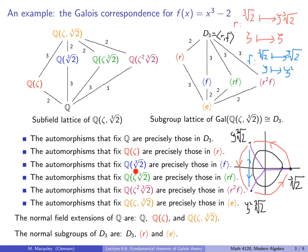Next, Q adjoined the cube root of 2: the cube root of 2 is fixed by F, so the two automorphisms that fix this subfield form the corresponding subgroup generated by F. Next, Q adjoined zeta times the cube root of 2: I claim the two automorphisms that fix this subfield are in the corresponding subgroup. We can check informally — if we do R then F, that automorphism fixes this root and swaps the other two.